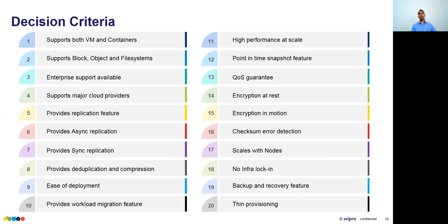Criteria six and seven are the types of replication supported — async and sync. Eighth: does it provide deduplication and compression? These are standard software-defined storage features. Ninth: ease of deployment matters — some solutions are very difficult to implement with only command-line options, which is challenging when managing storage at scale.